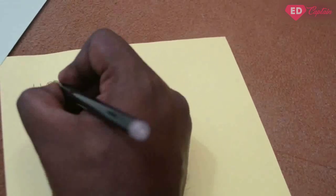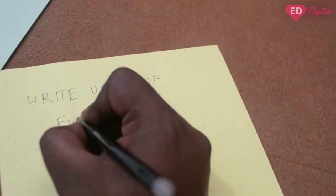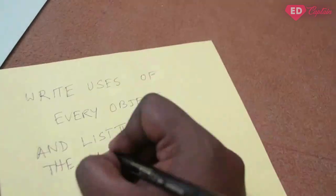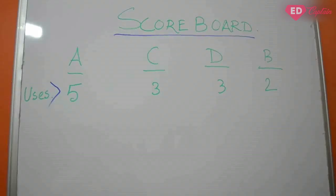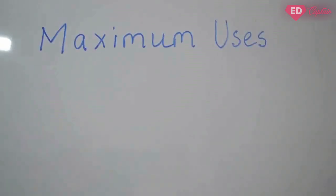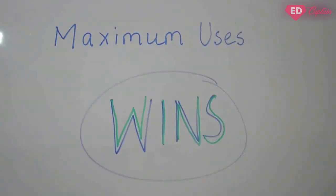The person who writes the maximum users gets the maximum score. You can keep score on a scoreboard, and the person with the maximum users wins the round.